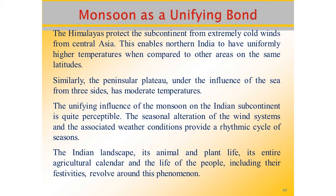Year after year, people from India — from north to south and from east to west — wait eagerly for the arrival of monsoons. The monsoon winds bind the whole country by providing water to set agricultural activities in motion. The river valleys which carry this water also unite as a single river valley unit. This is why the monsoon is called a unifying bond.